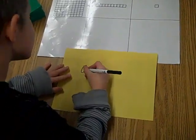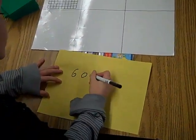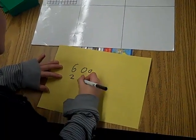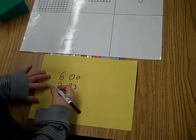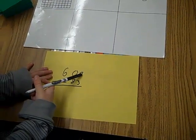600 take away 283. First you subtract the ones.